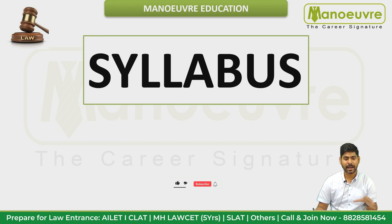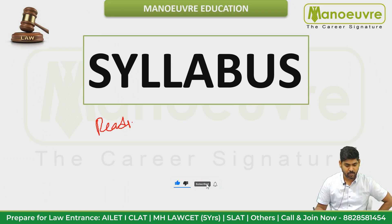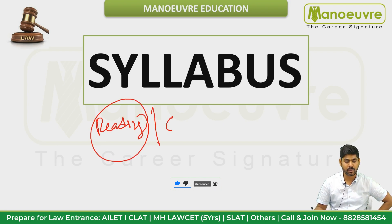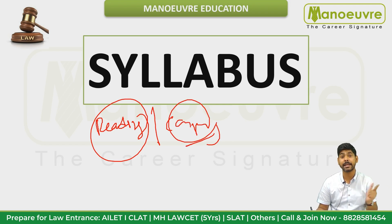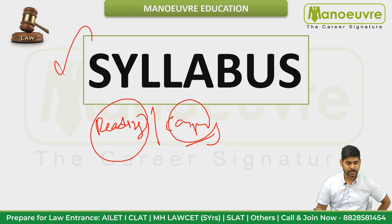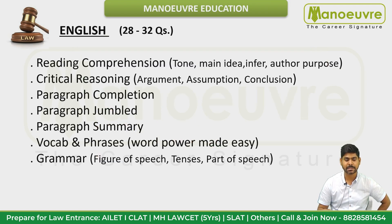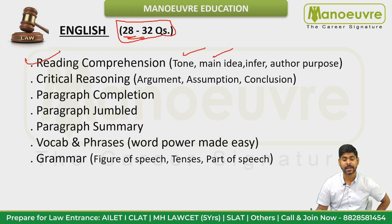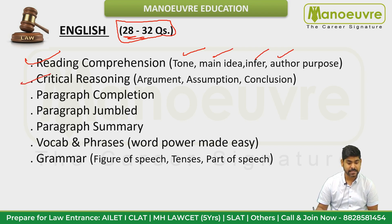If you crack the CLAT exam, you have to do a lot of reading because it is more of a comprehension-based exam. You should have good understanding skills and reading speed. The English syllabus has 28 to 32 questions covering reading comprehension, tone questions, main idea questions, inference-based questions, author questions, critical reasoning, argument, assumption, conclusion questions, paragraph completion, and paragraph summary.